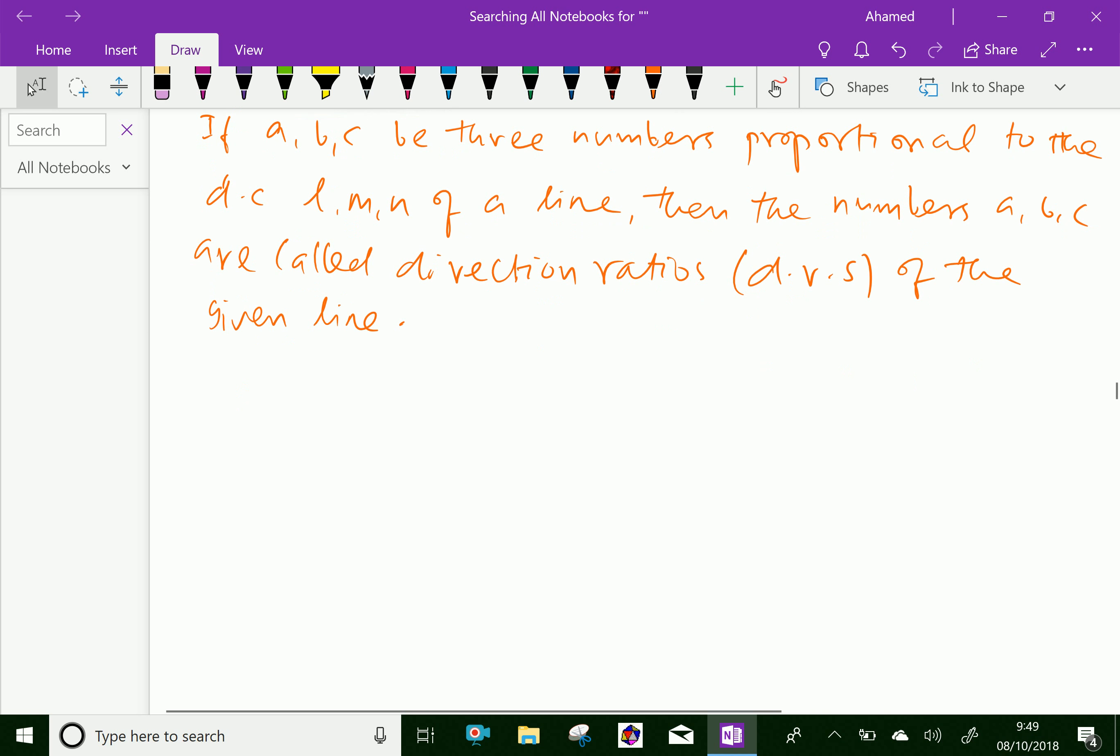Now, we have the relation L over A equals M over B equals N over C, which is further you can write as plus or minus square root of L square plus M square plus N square over square root of A square plus B square plus C square.